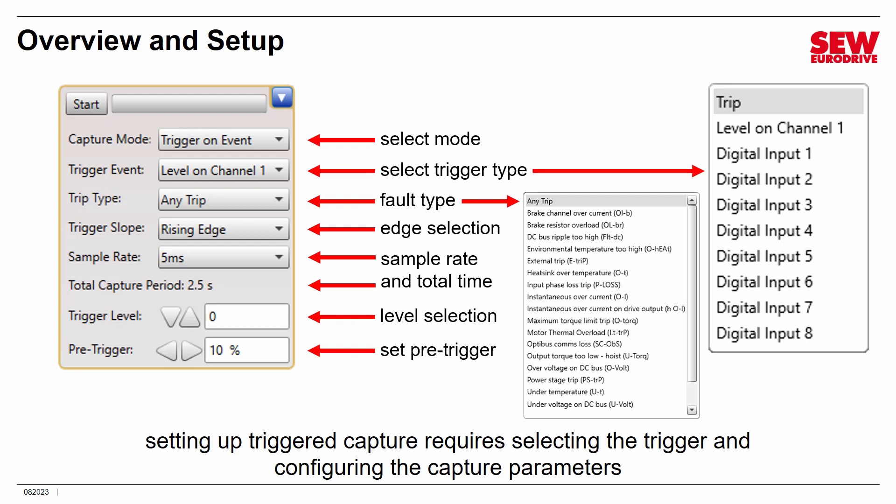Then set the pre-trigger percentage — the post-trigger percentage is 100% minus this value. With it set to 10% here, post-trigger is automatically 90%. That's all the setup, and finally you click the Start button and the scope will start waiting for the trigger — sort of like cocking a gun. Once it's cocked, it's ready to fire when you pull the trigger, and the scope goes into wait mode.